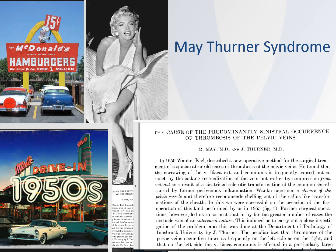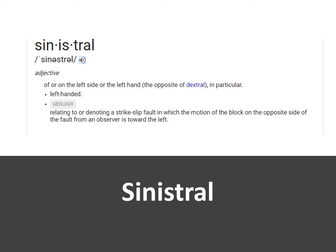There was an article that appeared in the journal Angiology: "The Cause of Predominantly Sinistral Occurrence of Thrombosis of the Pelvic Veins," authored by May and Thurner. When I first read the original paper, I had to look up one of the words in the title: sinistral. Sinistral is an adjective describing the left side. So the predominantly sinistral — or left-sided — occurrence of thrombosis of the pelvic veins leads us to believe that May-Thurner Syndrome is a left-sided disease.